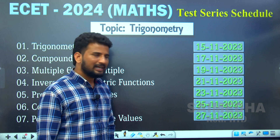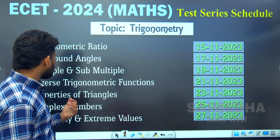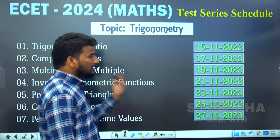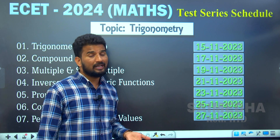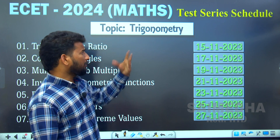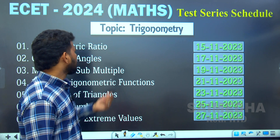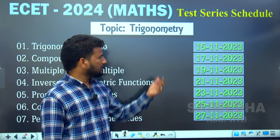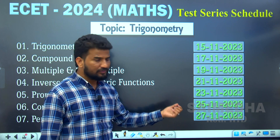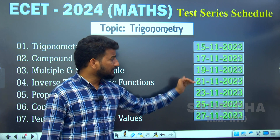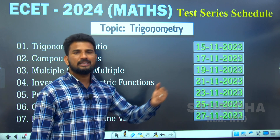Let us see the exam schedule by topic here. The exams are going to start from 15th of November. The topic will be trigonometry and related subtopics — we are going to conduct exams one by one covering the entire trigonometry syllabus. Trigonometric ratios will be in the first exam on 15th November. Compound angles will be in the second exam on 17th November. Multiple and submultiple angles will be conducted on 19th November. Inverse trigonometry functions will be conducted on 21st November. Properties of triangle will be conducted on 23rd November.